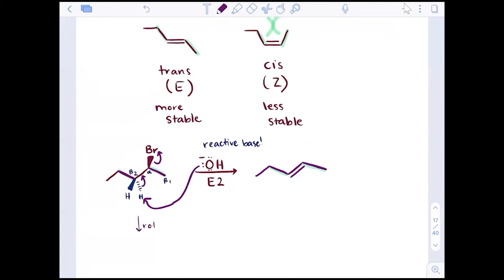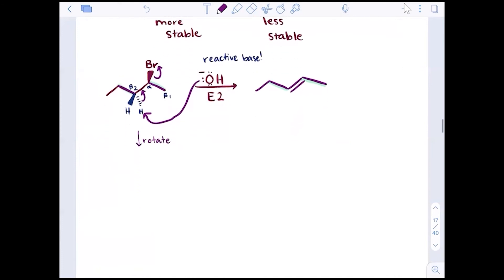However, what if we were to rotate around the alpha and beta 2 bond? What if I were to rotate so that one hydrogen went to the back that wasn't in the back to begin with? That other hydrogen, namely this guy, he could be rotated to the back to be anti-periplanar. And then when my hydroxide comes in to attack, I get a different stereochemistry.